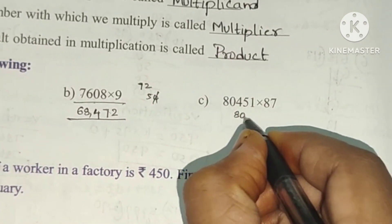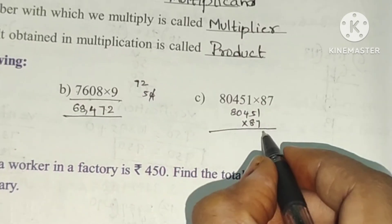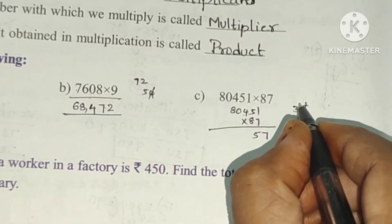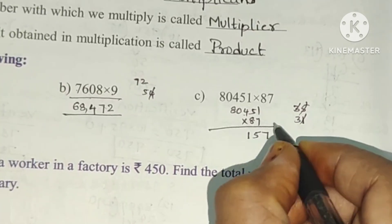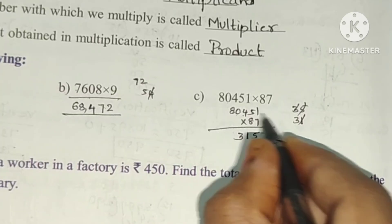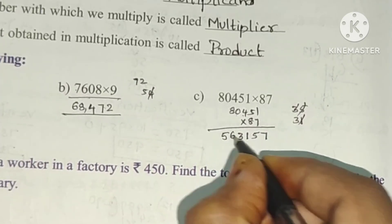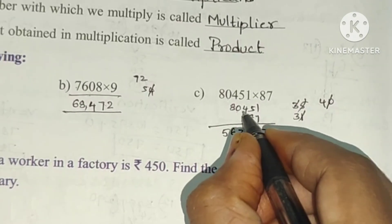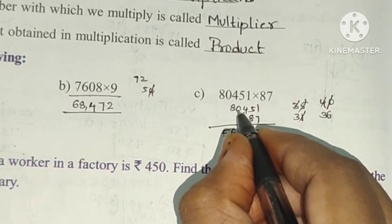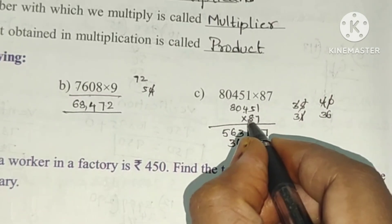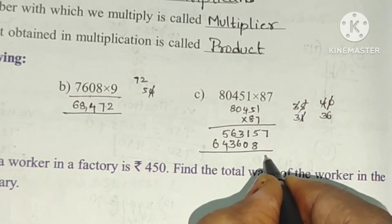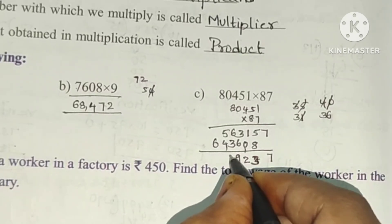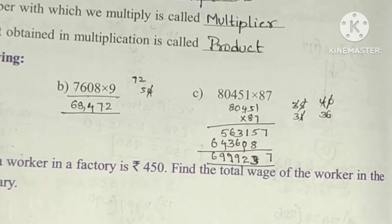Next, 80451 into 87 to multiply. First 7. 7 times 1 is 7, 7 times 5 is 35, write 5. 7 times 4 is 28 plus 3 is 31, write 1. 7 times 0 is 0 plus 3 is 3. 7 times 8 is 56. Next 8 times 1 is 8, 8 times 5 is 40, write 0. 8 times 4 is 32 plus 4 is 36. 8 times 0 is 0 plus 3 is 3. 8 times 8 is 64. So the answer will be 69 lakhs 99,237.